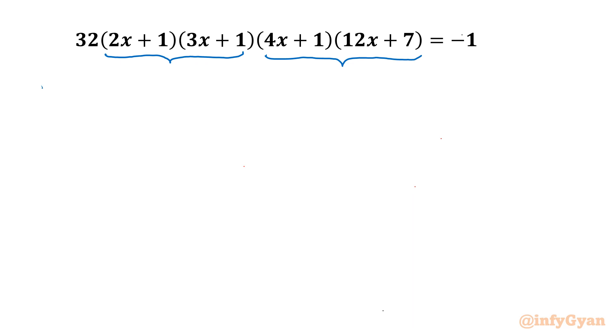Let me write here first 32 times. Let me multiply 2x times 3x gives 6x squared, 2x times 1 gives 2x, 1 times 3x gives 3x, 1 times 1 gives 1. Now the last two bracket products: 4x times 12x gives 48x squared, 4x times 7 gives 28x, 1 times 12x gives 12x, and 1 times 7 gives 7.